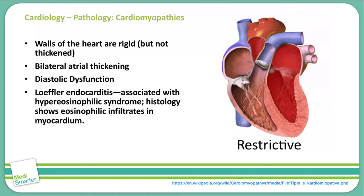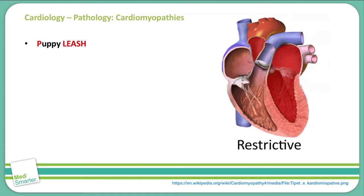What are the possible causes of restrictive cardiomyopathies? We can use the mnemonic PUPPY LEASH, using the P of 'puppy' and then all the letters of 'leash.' The P stands for post-radiation fibrosis — radiation of any type in the chest area can cause a restrictive cardiomyopathy that may potentially affect the pericardium as well.